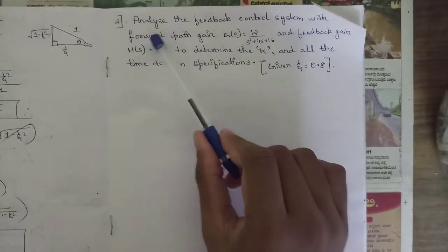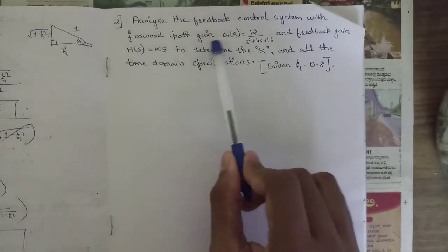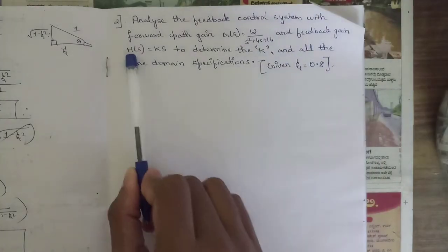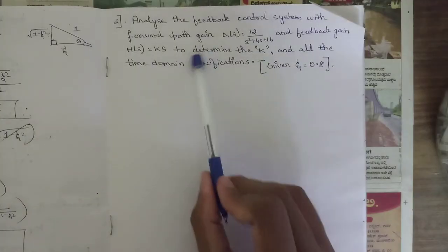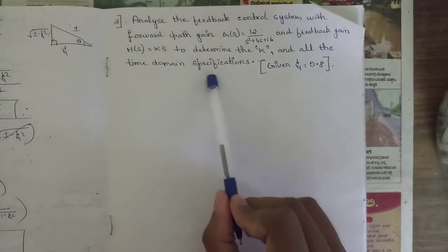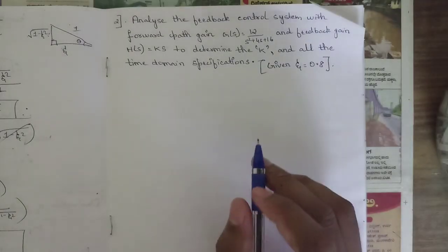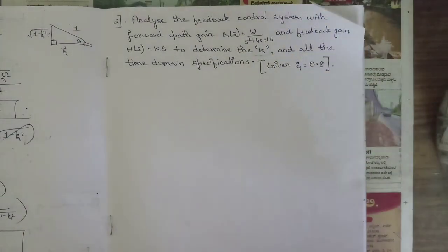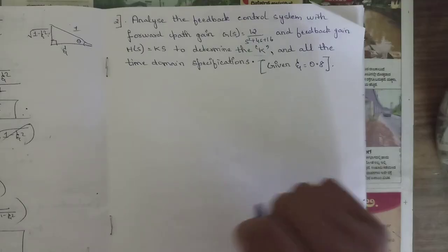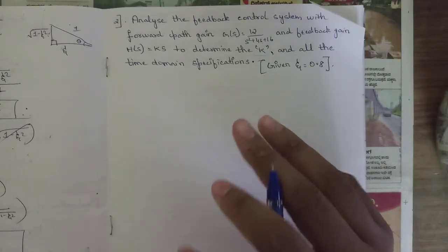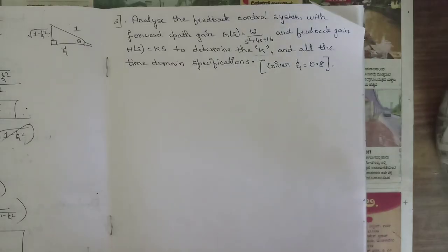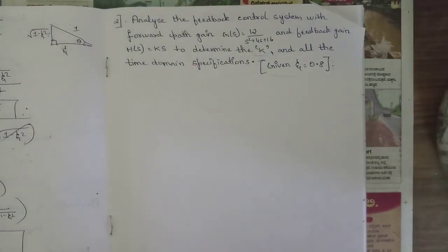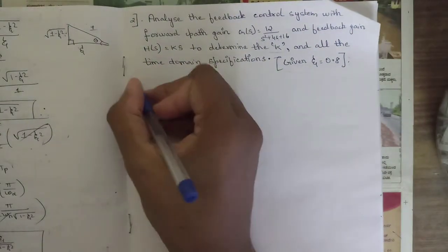The next question asks us to analyze a feedback control system where the forward path gain is G(s) = 12/(s² + 4s + 16) and the feedback gain H(s) = Ks. We need to determine the value of K and all the time domain specifications — delay time, rise time, peak time, peak overshoot, and settling time. The damping ratio zeta is given as 0.8.